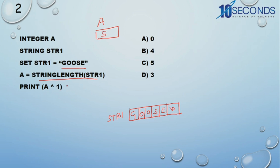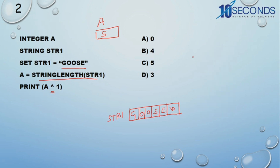Now print A exclusive OR. Most students take the answer as C because they got 5 from the length — they get confused. But here A exclusive OR with 1. This caret symbol is called exclusive OR, and exclusive OR is a bitwise operation. So if two bits: if bit 1 is 1 and bit 2 is 0, the answer is 1. If 0 and 1, the answer is 1. If both bits are the same — 1 and 1, the answer is 0; 0 and 0, the answer is 0. If both bits are different, the answer is 1. So we take 4 bits using the 8, 4, 2, 1 logic.